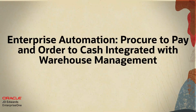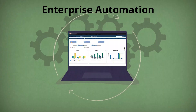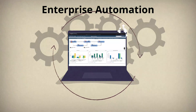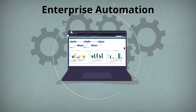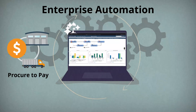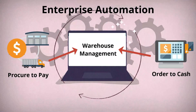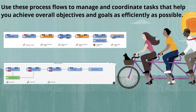JD Edwards Enterprise continues its Enterprise Automation initiative by delivering Enterprise One pages that depict the Procure-to-Pay and Order-to-Cash process flows integrated with Warehouse Management. You can use these process flows to manage and coordinate tasks that help you achieve overall objectives and goals as efficiently as possible.